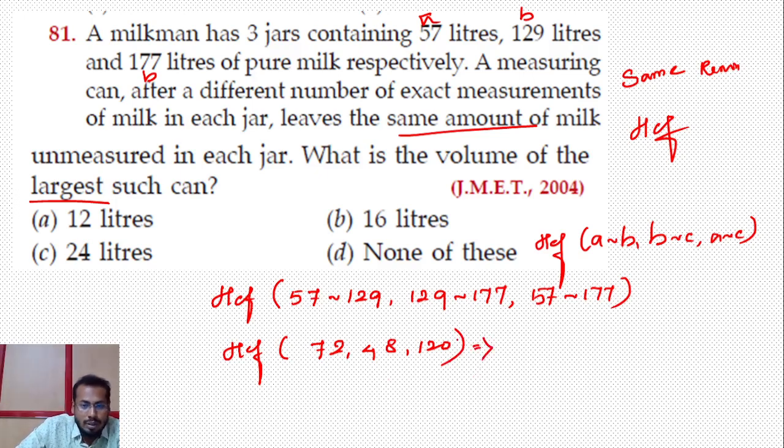The HCF formula for same remainder is: HCF of (a - b), (b - c), and (a - c). This is the formula for HCF with same remainder. Let's take 57 as a, 129 as b, and 177 as c.